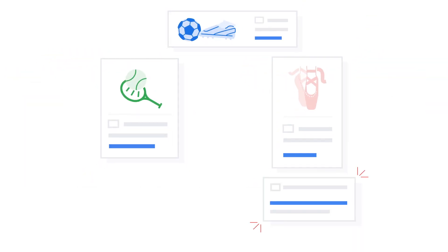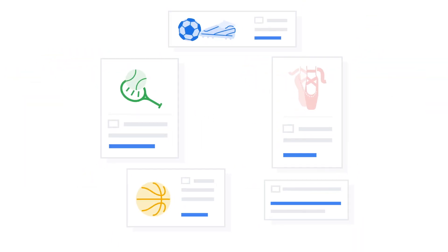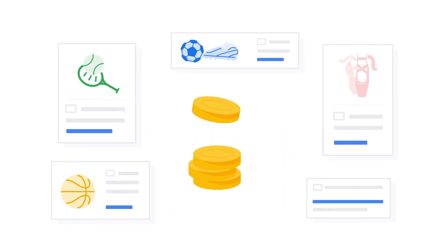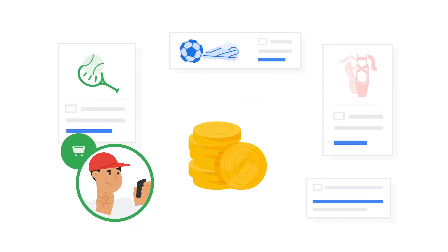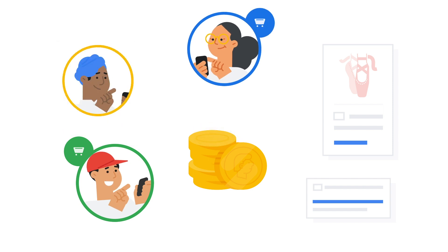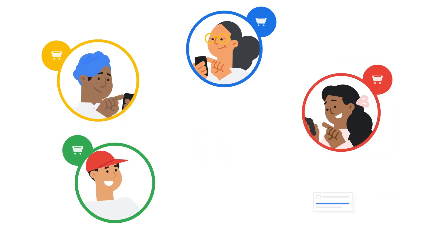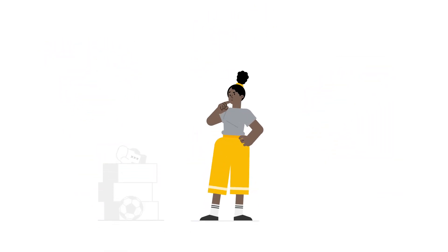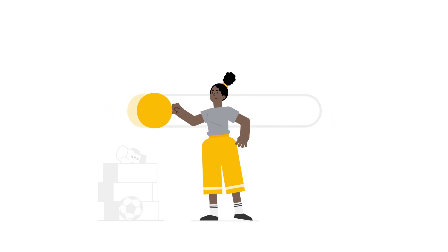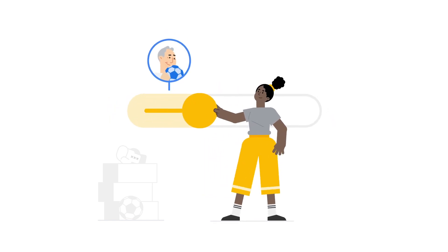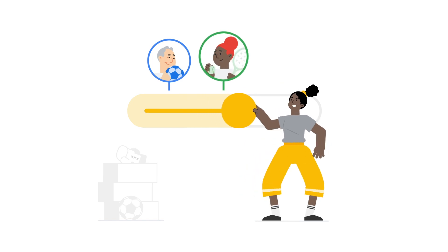With Smart Campaigns, setting a budget really means deciding how much to spend on your ads. That's because you'll only ever pay for the clicks you receive. You can also update your budget at any time. So if you're looking to drive more clicks, all you have to do is increase your daily budget.